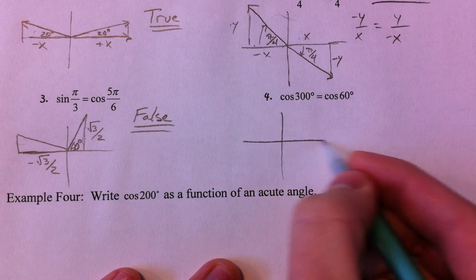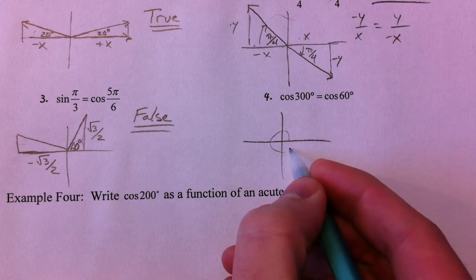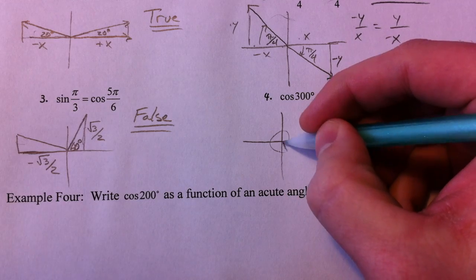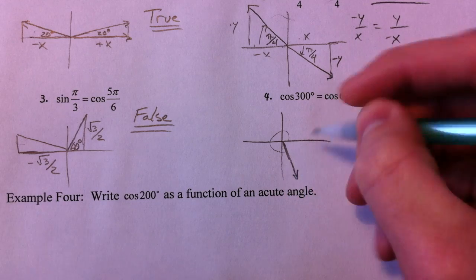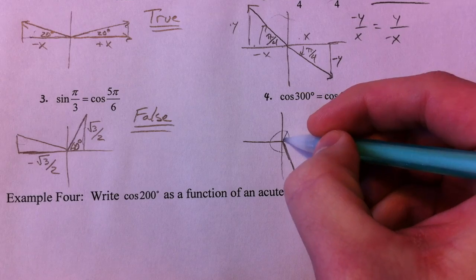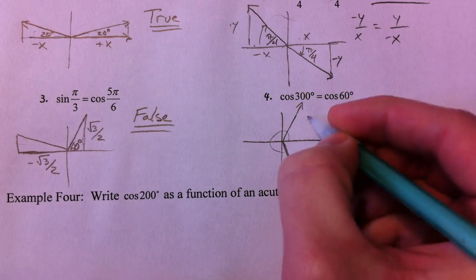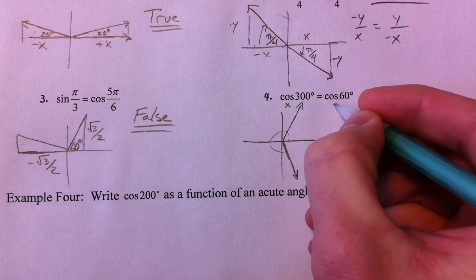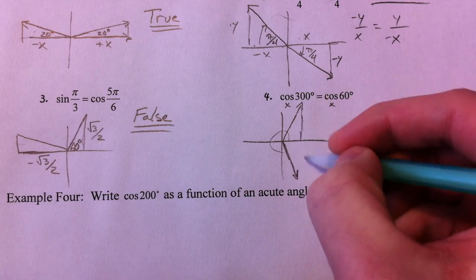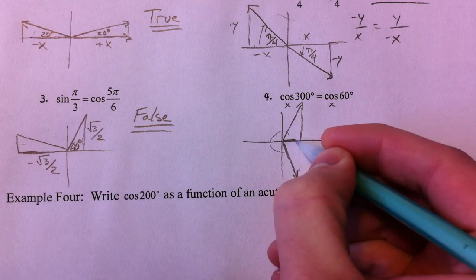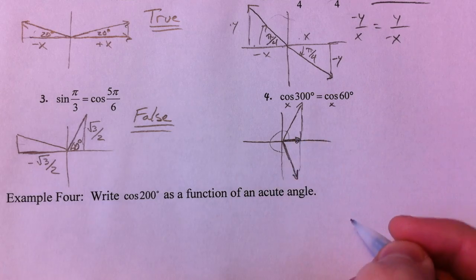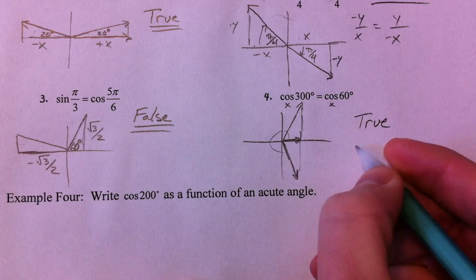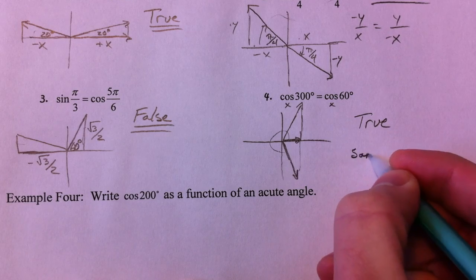Cosine of 300 — that's almost all the way around. And cosine of 60 is up here. We're dealing with x values for cosine. The x value at 300° is the same as the x value at 60°. So this is true — same x values.